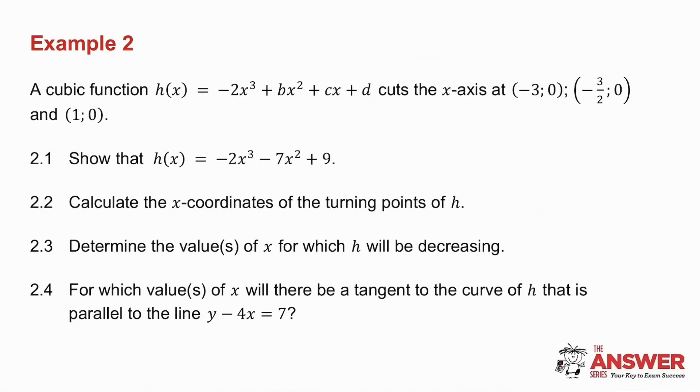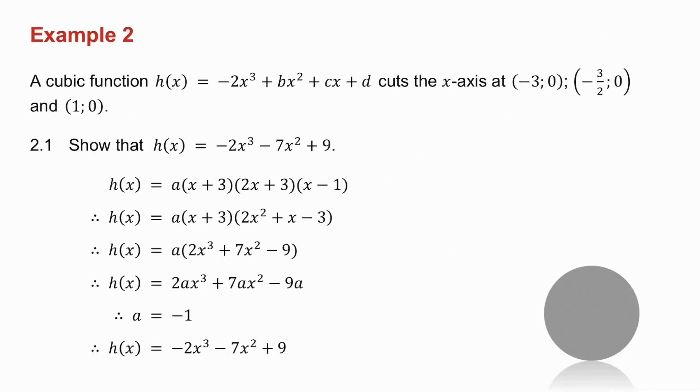Example number two is a question on cubic graphs. What I want you to do is pause the video, try this whole question, and then we will do it together. They've given me the three x-intercepts: an x-intercept of minus 3 comes from a bracket (x+3), an x-intercept of minus 3/2 comes from (2x+3), and an x-intercept of 1 comes from a bracket (x-1).